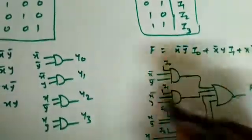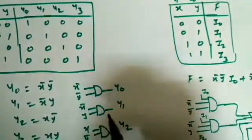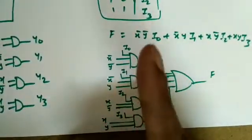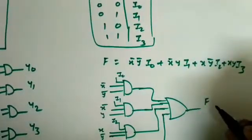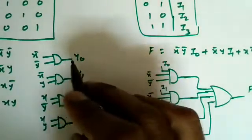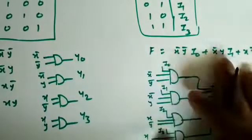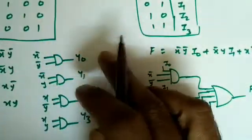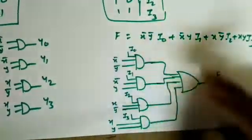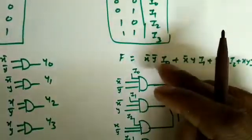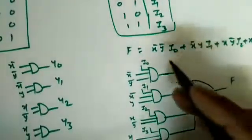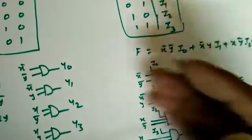One disadvantage compared to a decoder is that using a 2×4 decoder you can implement multiple two-variable functions simultaneously by connecting different sets of minterms to separate OR gates. Whereas with one multiplexer you can implement only one function since it gives only one output. For example, a full adder can be implemented with a single 3×8 decoder, but you need two multiplexers — specifically two 8×1 MUXes — to implement the full adder.